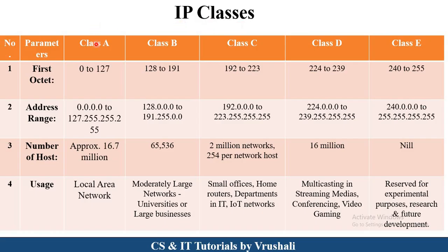These IP classes are divided into five parts. Focus here on this particular table: Class A, Class B, Class C, Class D, and Class E. All IP addresses are divided as per their particular range. The range in Class A is 0 to 127, meaning all addresses present between 0 to 127. For example, the first address is 0.0.0.0 and the last address is 127.255.255.255. This range is called Class A.